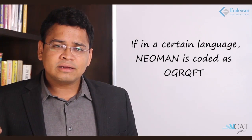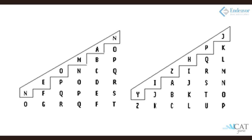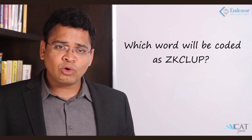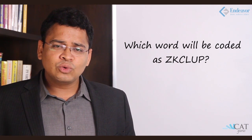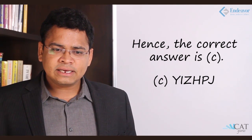Another decoding example: if NEWMAN is coded as OGRQFT, we observe that N is coded as O (one place ahead), E as G (two places ahead), O as R (three places ahead), and so on — each successive letter is shifted by an incrementally increasing number of positions. Given this, if something is coded as ZKCLU P, we go in reverse: take Z and find one less (Y), take K and find two less (I), and so on. The answer is YIZHPJ, which is option C.